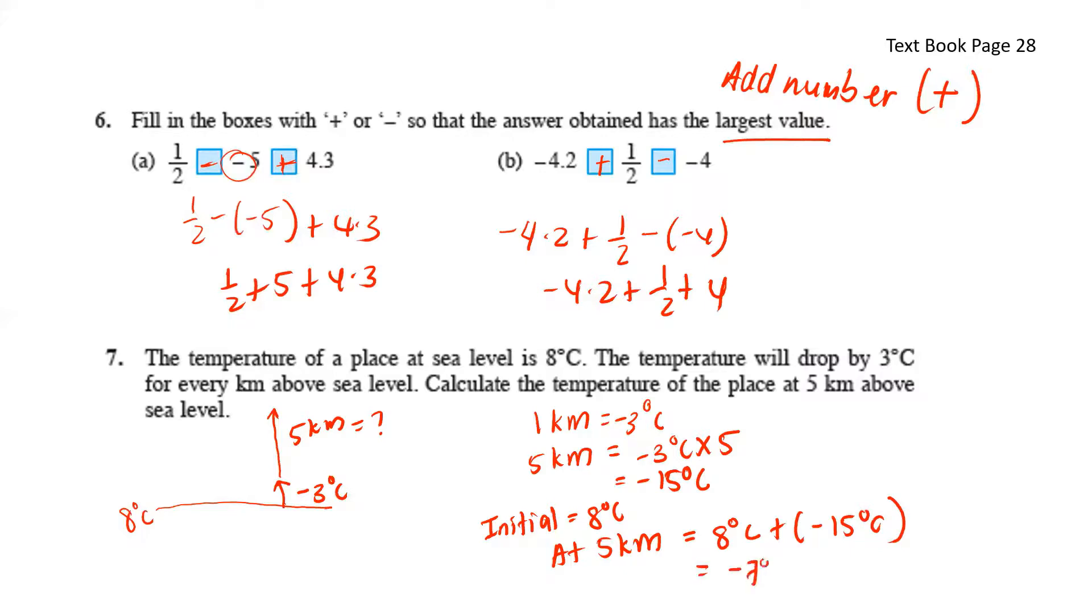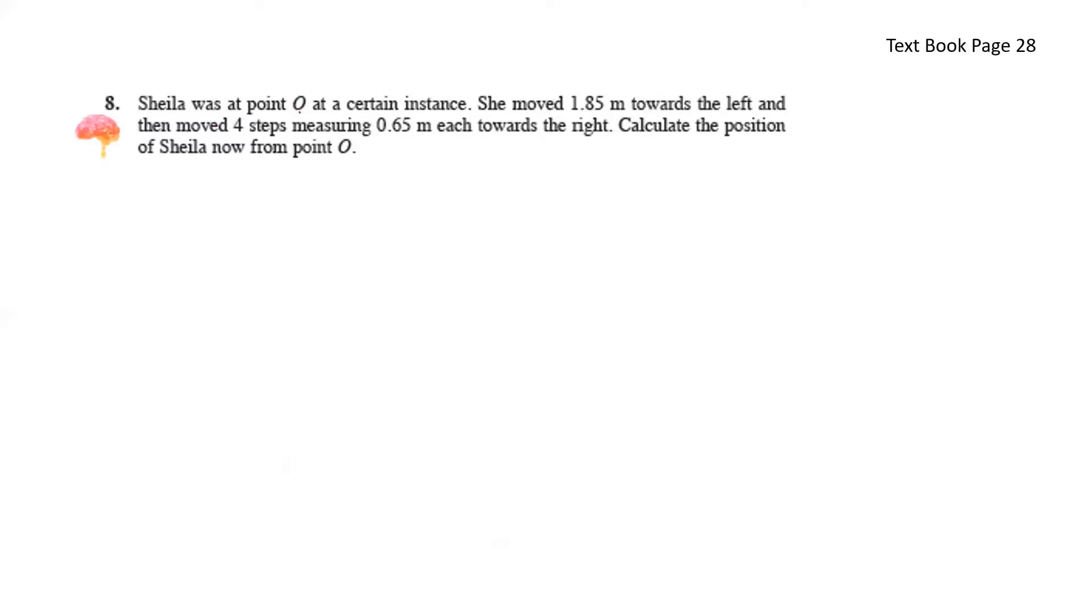Sheila was at 0.0 at a certain instance. She then moves 1.85 meters towards the left. 1.85 meters towards the left. And then she moved 4 steps measuring 0.65 meters each towards the right. So 0.65 times 4, that gives us 2.6 meters to the right.